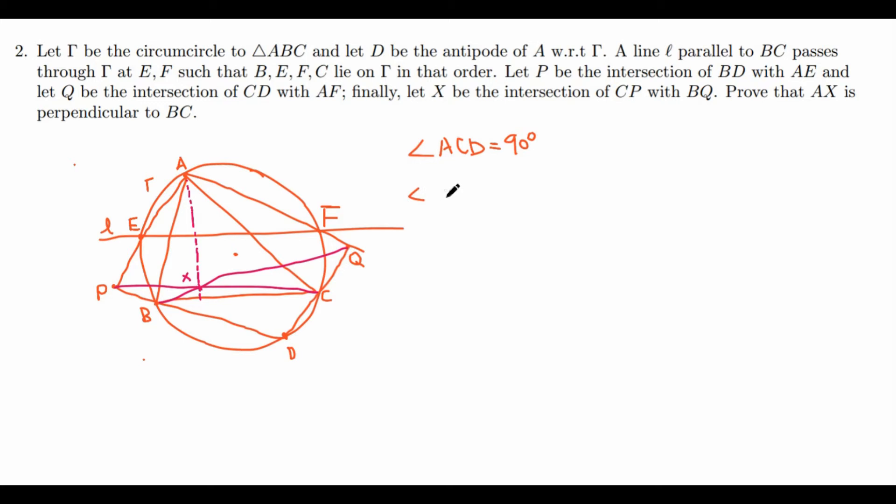And similarly, we can find that angle ABD is also equal to 90 degrees. Okay, so that's nice. Well, similarly, since ACD is equal to 90 degrees and DCQ is on a line, ACQ is equal to 90 degrees. So ACQ is equal to 90 degrees. And similarly, ABP is equal to 90 degrees. So we know that ACQ and ABP are right triangles. So I will mark it as shown like this.